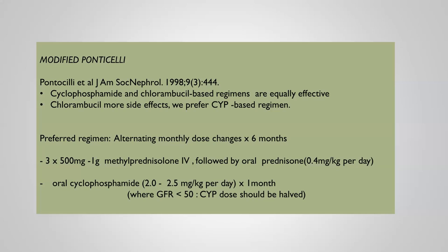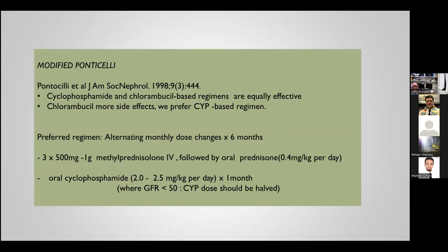The modified Ponticelli regimen, established in 1998, alternates cyclophosphamide or chlorambucil with steroids over six months. Month one is steroids — a three-day IV pulse followed by oral prednisolone for the rest of the month. Month two is cyclophosphamide — in the UK we prefer the oral form over IV. Please remember that cyclophosphamide dose adjustments are required when GFR falls below 50.